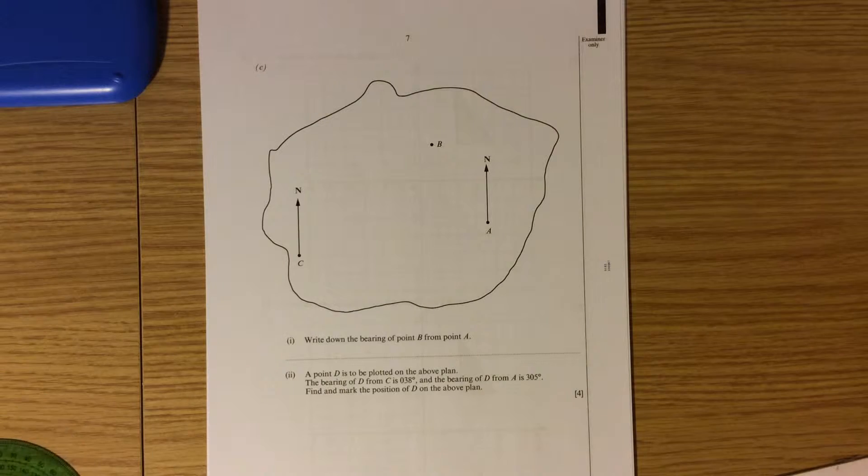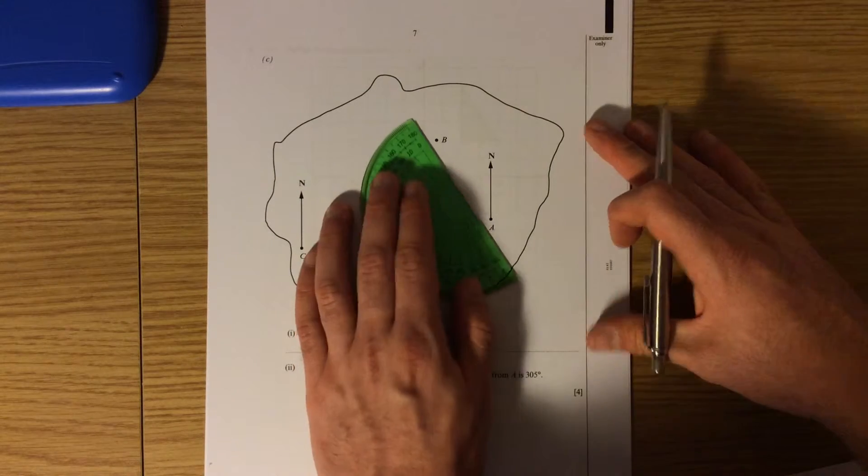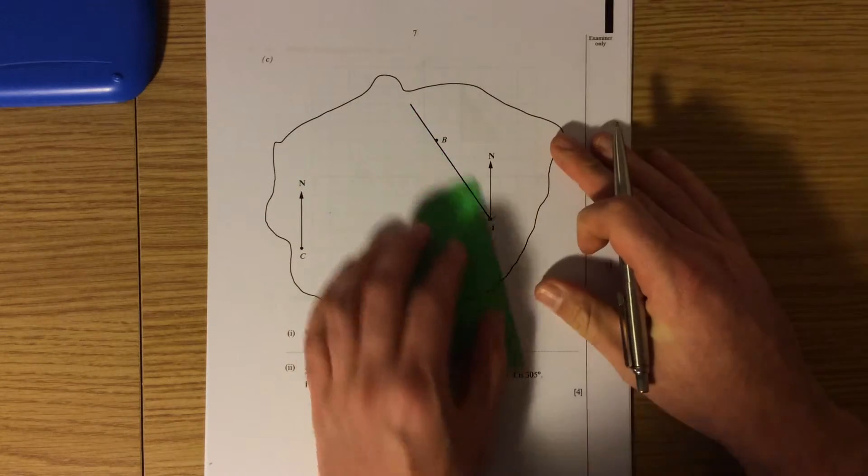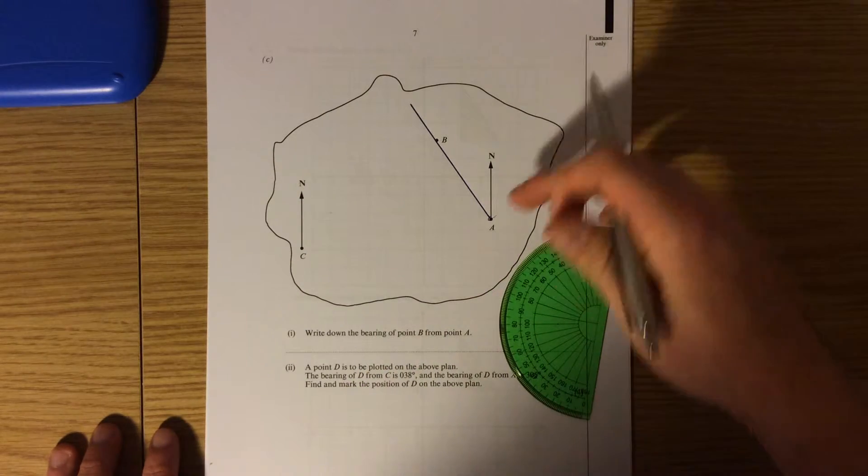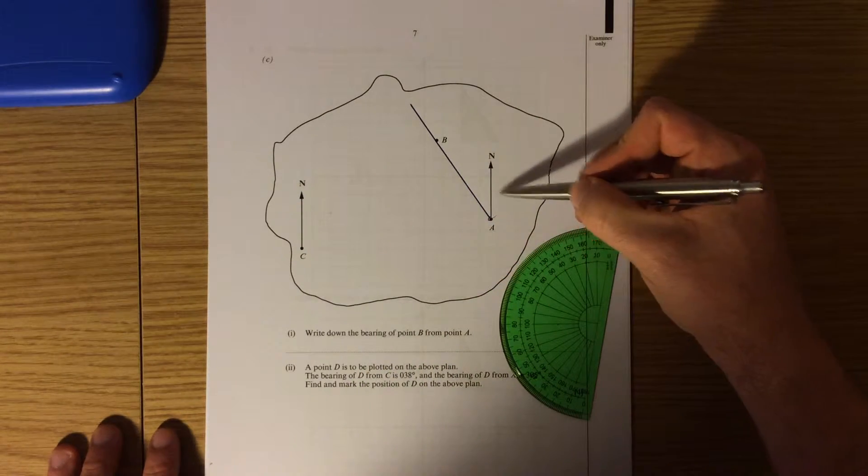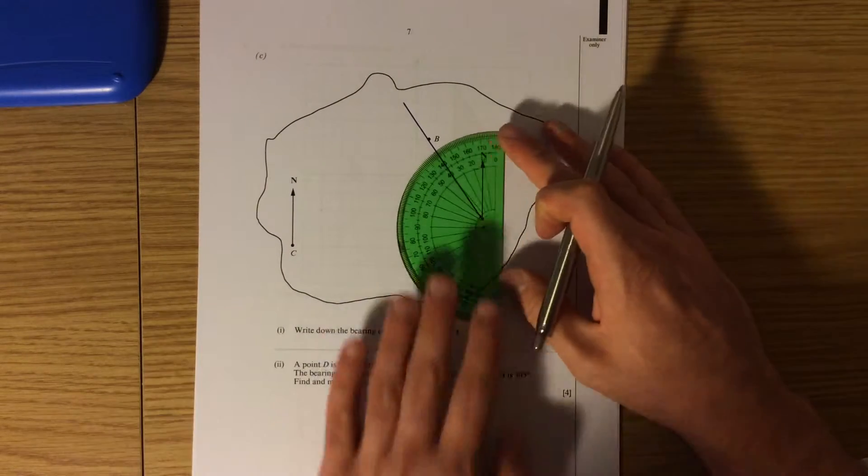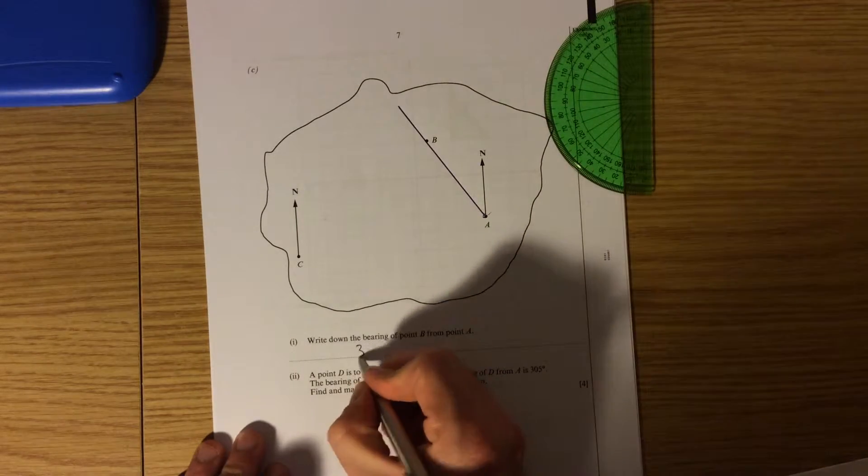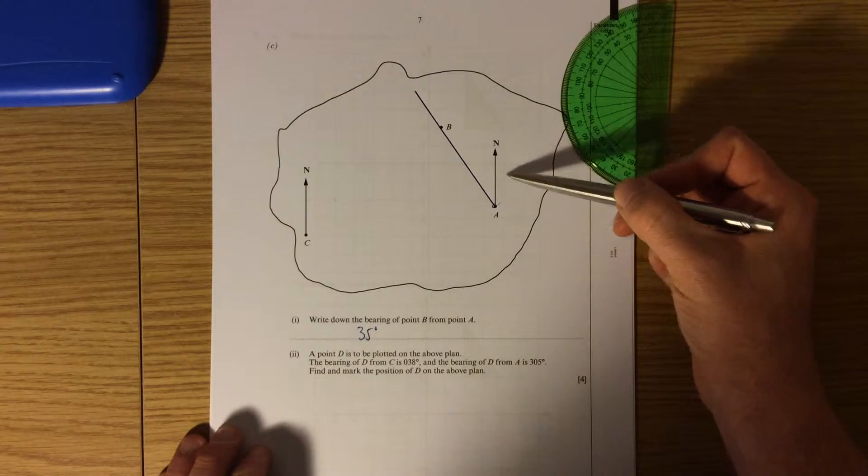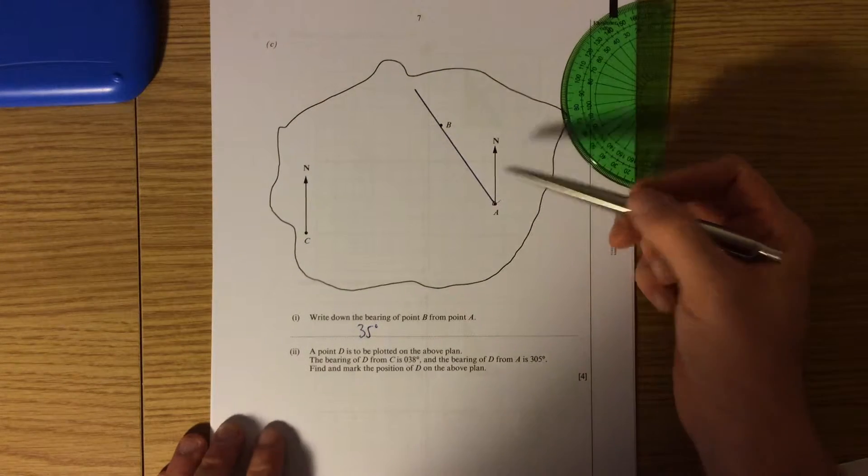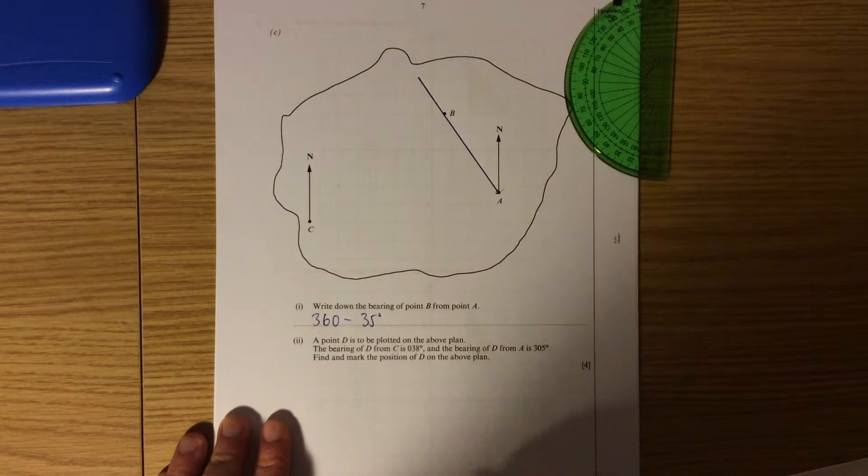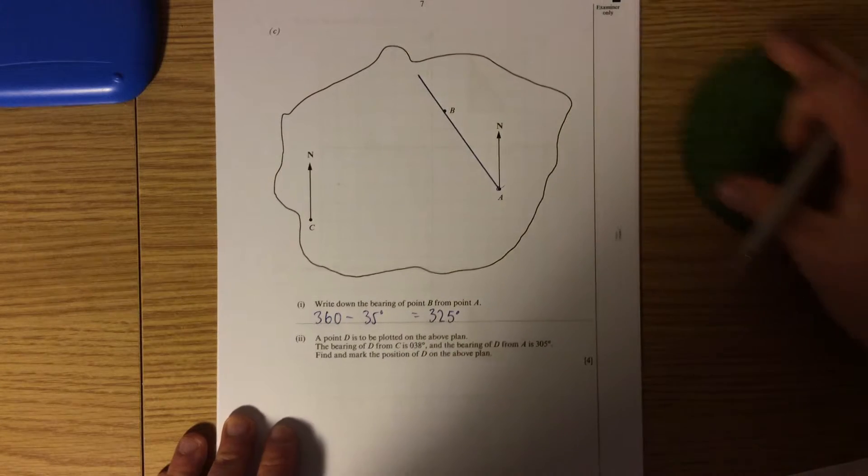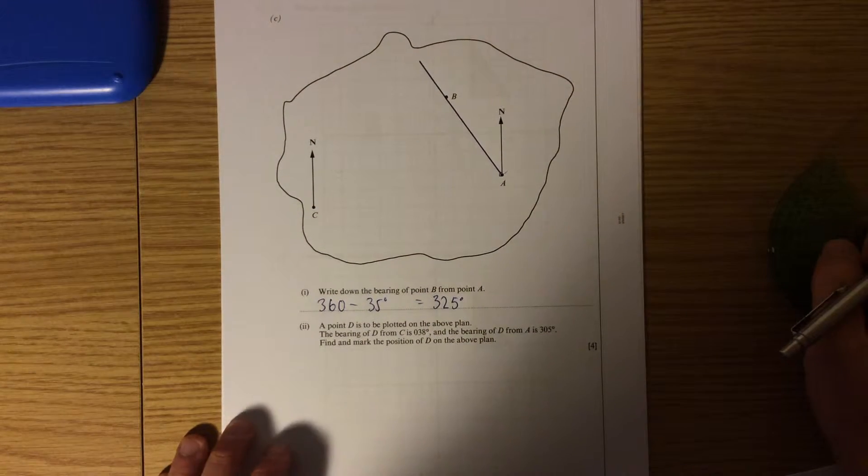Part C, bearings. Write down the bearing of point B from point A. So to make my life easier I'm going to draw a line from point A to point B and I'm going to extend it a bit further just to make sure that my protractor will be easy to read. Now I need to go clockwise to find the bearing, so I can't measure up all the way around there with the 180 degree protractor. So I'm going to measure this way instead which gives me the angle 35 degrees. However, I need to do this angle, not that one in there. All the way around would be 360, so I'm going to do 360 take away that 35, which will give me an answer of 325 degrees. You are allowed a tolerance of 2 degrees on bearings, but make sure you are as accurate as possible.